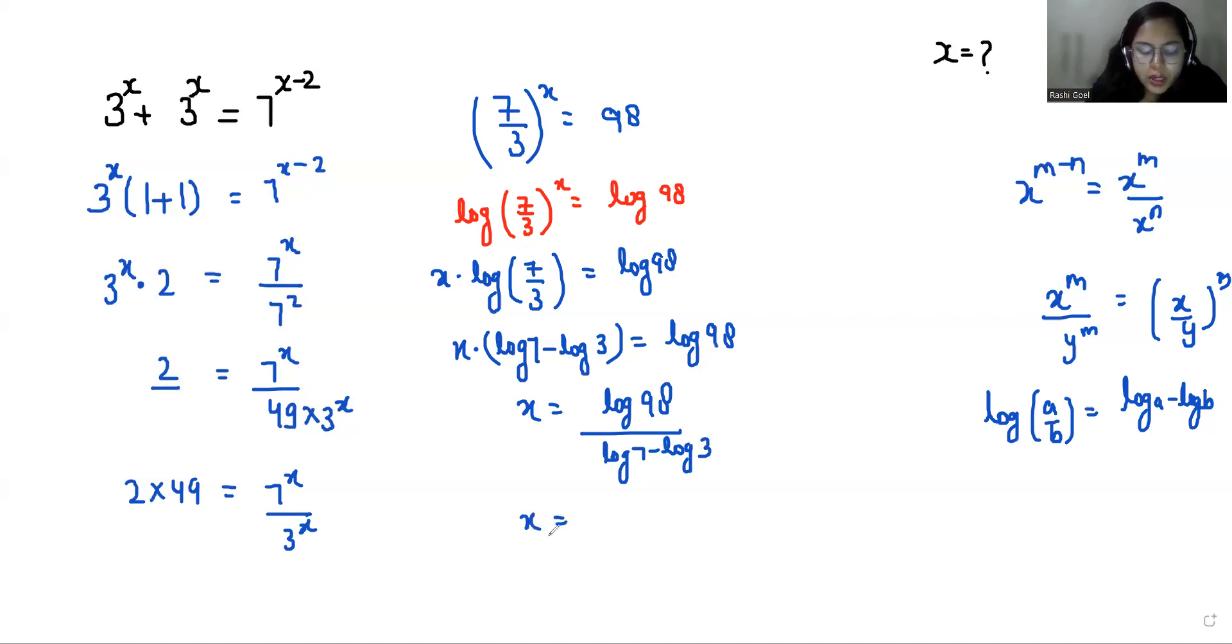The value of log 98 is 1.9912. The value of log 7 is 0.8451 minus 0.4771. So x equals 1.9912 by 0.3680, so the value of x is 5.1409.